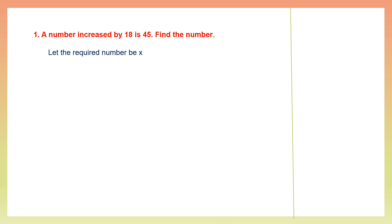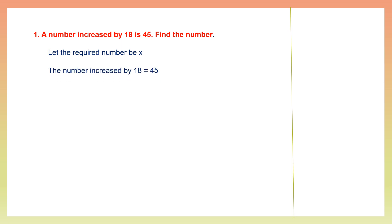Let the required number be x. The number increased by 18 is 45 — this is given to us in the question. So let the required number be x, and if we increase that number by 18 we get 45. So x plus 18 is 45.